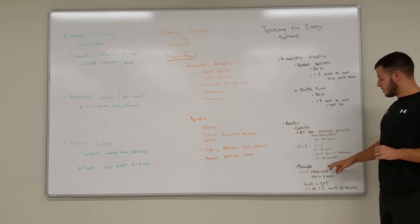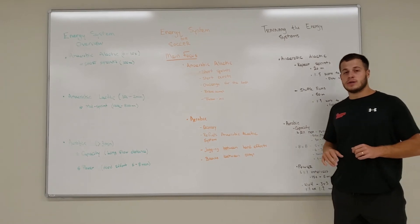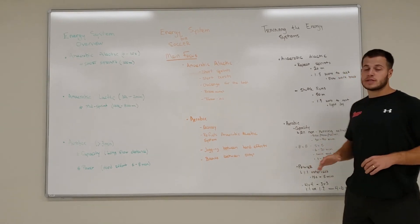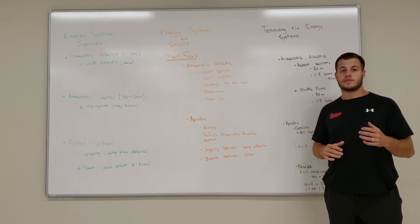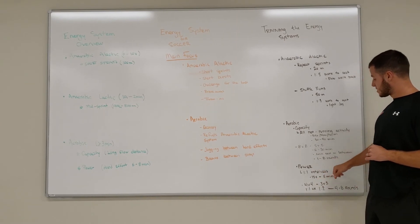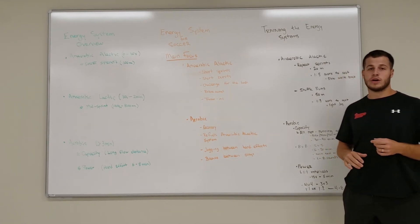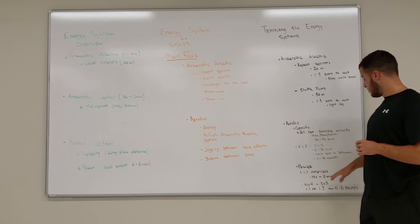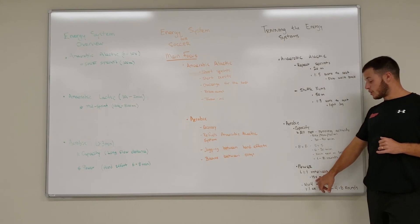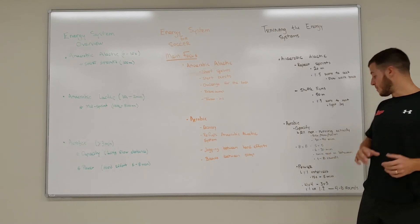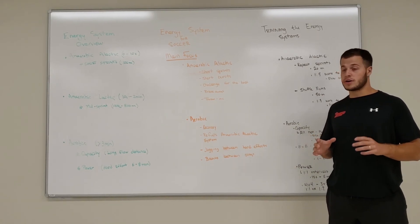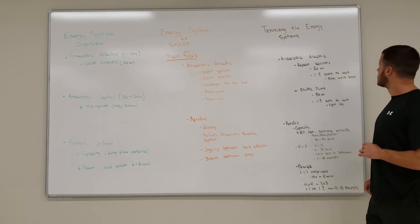For aerobic power, we use a one-to-one work-to-rest ratio, meaning however long you work, you rest for that same amount of time. The format is 4v4 or 3v3 small-sided games with intervals ranging from 15 seconds to 5 minutes, going four to eight rounds. If you're doing 15 seconds on and 15 off, go up to eight rounds. If you're doing 5 minutes on and 5 minutes off, that's a long hard effort, so drop down to four rounds.